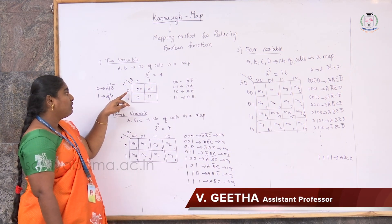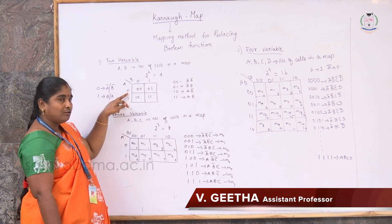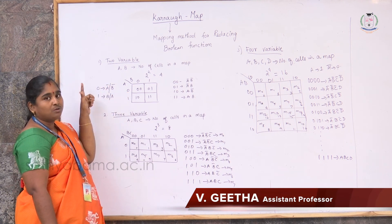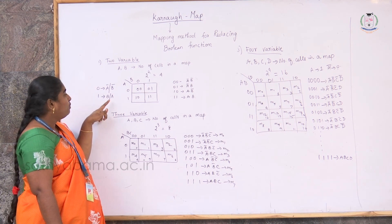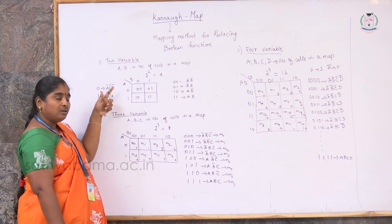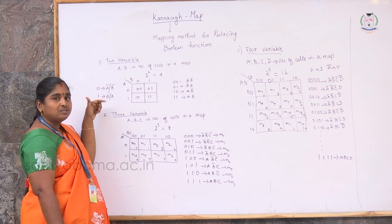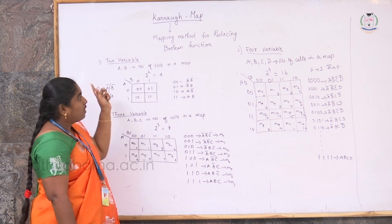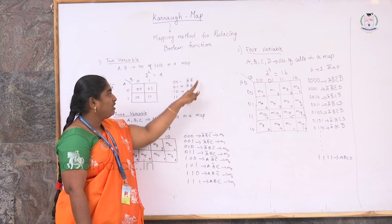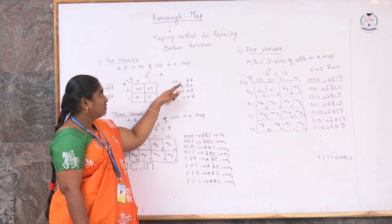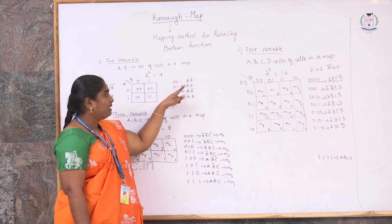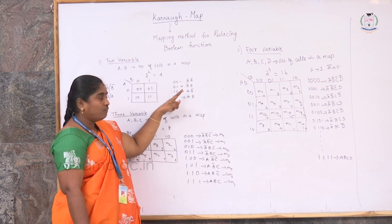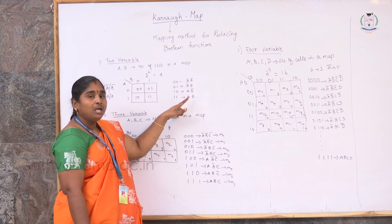When A is complemented or B is complemented, it is represented as 0. When A is in non-complemented form or B is in non-complemented form, we represent it as 1. The 4 combinations are: 0,0 for A bar B bar; 0,1 for A bar B; 1,0 for A B bar; and 1,1 for A B.